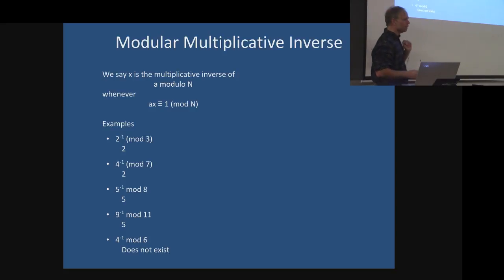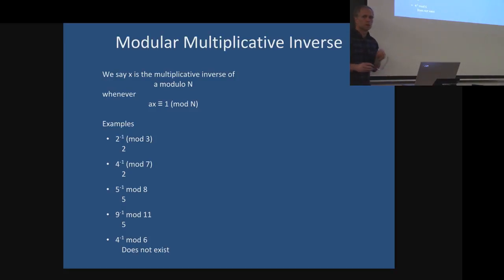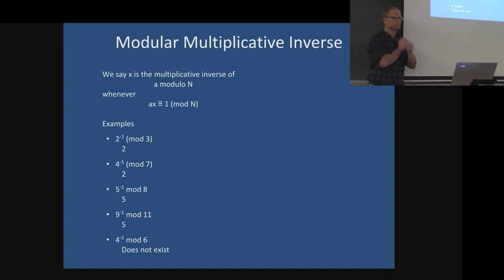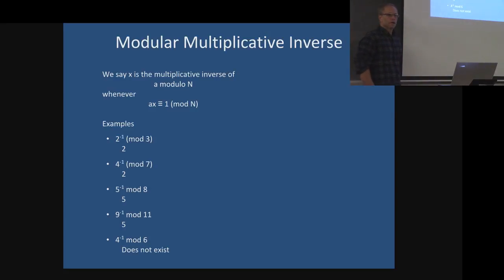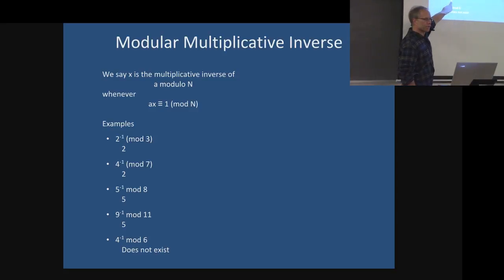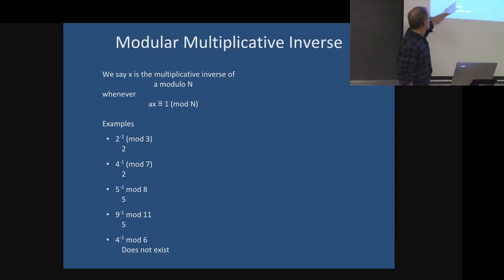What would be another inverse of 5? You can use any number equal to 5 mod 11. So 5 works, 16 works, 27 works, 38 works, negative 6 works, negative 17 works, and so on. When I ask this question, I prefer not to see a negative number as the answer and I don't want to see a number bigger than the modulus. The preferred form is to give a number between 0 and the modulus. Technically, there's an infinite number of possible answers because there are infinitely many numbers equivalent to 5 mod 11.